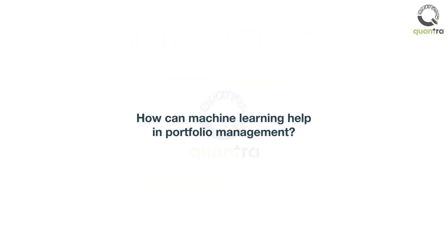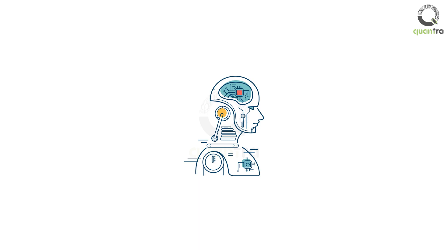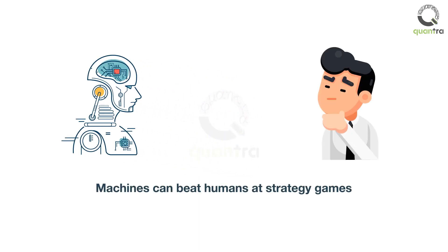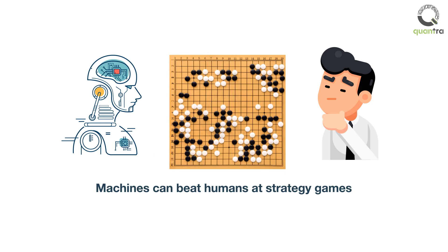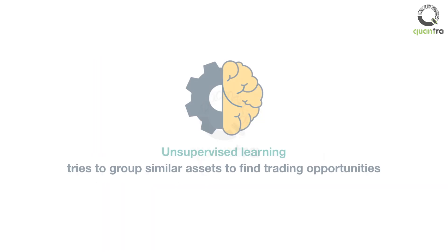How can machine learning help in Portfolio Management? Machines can find patterns that humans can't. Machines are beating humans at strategy games like chess and Go — then why not use advanced techniques for Portfolio Management? Unsupervised Learning, a way of machine learning, tries to group similar assets to find trading opportunities using the assets' features.